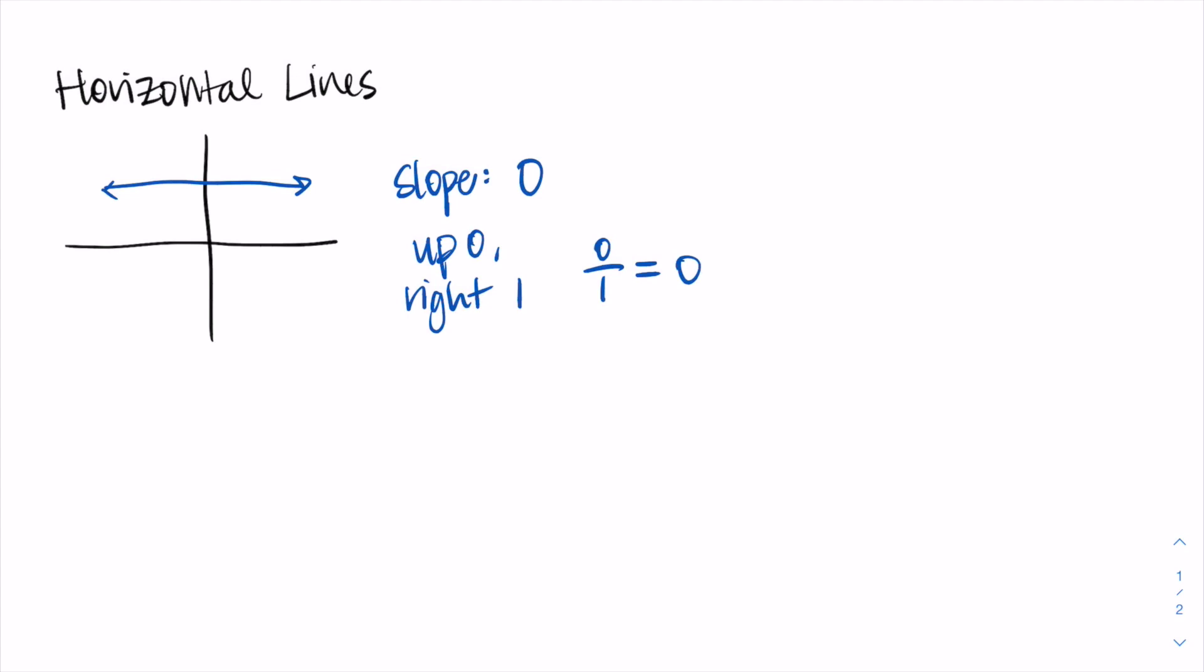To write an equation for these lines, instead of memorizing formulas, think that on a horizontal line all the y values are the same. No matter which x value we go to, it's always the same height on the y-axis. Points might have different x values, but they all reach the same y value. So our equation is y equals something. Let's say this is at a, so we write y equals a.